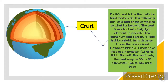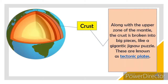The crust is highly variable in thickness. Under the ocean — such as near the Hawaiian Islands — it may be as little as 5 kilometers thick. Beneath the continents, the crust may be 30 to 70 kilometers thick. Along with the upper zone of the mantle, the crust is broken into big pieces like a gigantic jigsaw puzzle — these are known as tectonic plates.